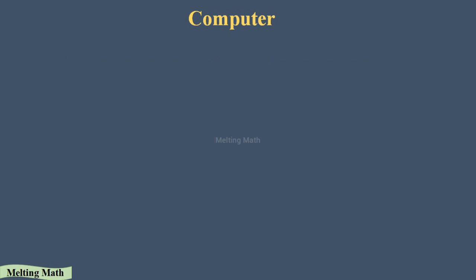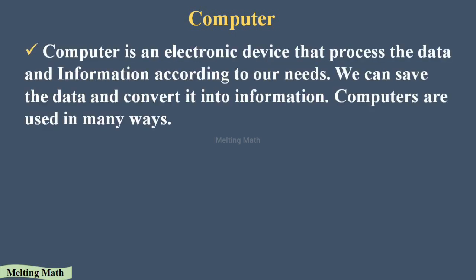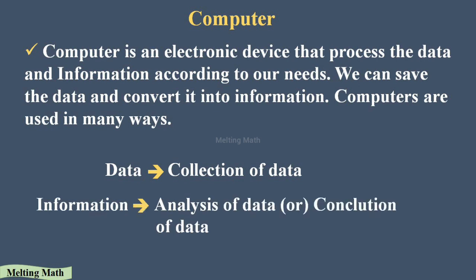The definition of computer: a computer is an electronic device that processes data and information according to our needs, so we can save data and convert it into information. The computer is an electronic device because it works with the help of electric current. Data is a collection of information, and information is the analysis or conclusion of data.